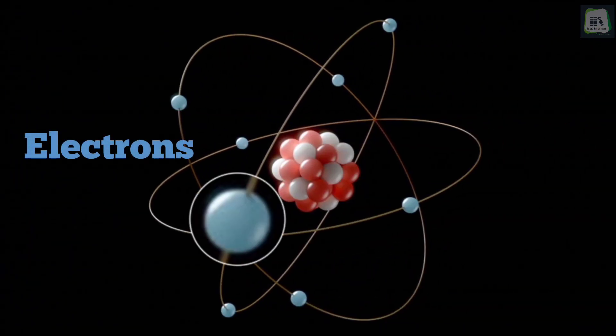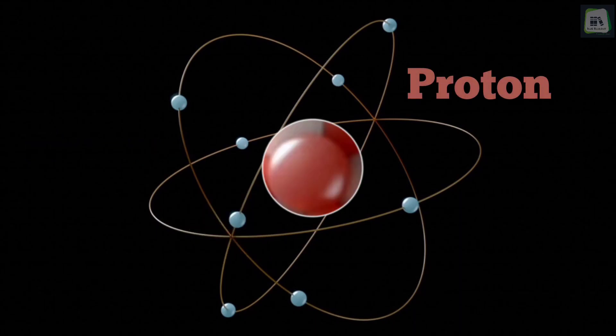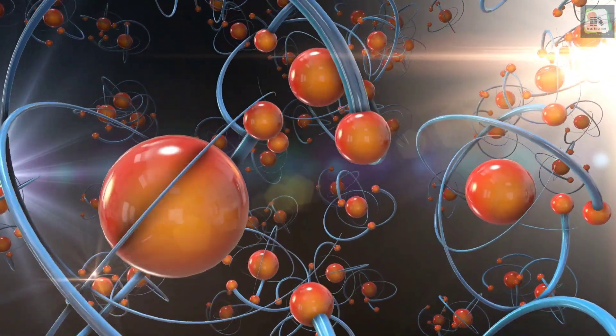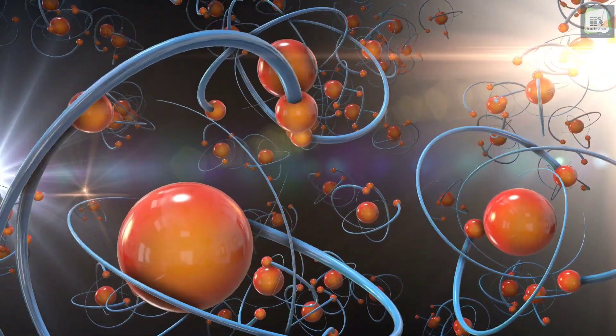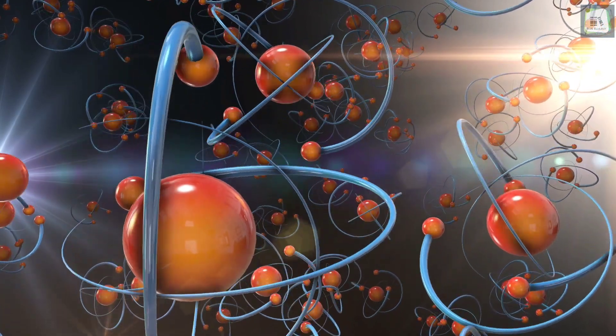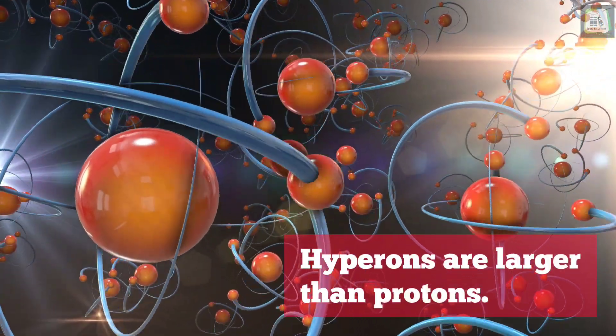Electrons are particles that carry a tiny negative charge of electricity. The proton, about 2,000 times as heavy as the electron, carries a positive charge. The neutrino, about 1-2,000 the size of the electron, has no charge. Mesons may be either positively or negatively charged. Hyperons are larger than protons.